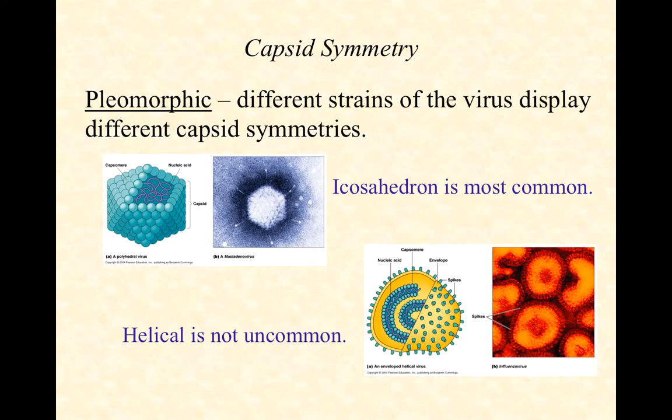Let's start with the capsid. Capsids for influenza viruses can be either icosahedral or helical. Icosahedral seems to be most common; helical is not at all uncommon. It really depends on the specific strain of influenza that we're talking about.